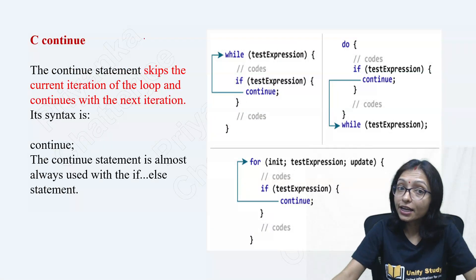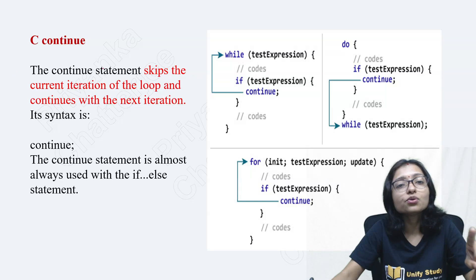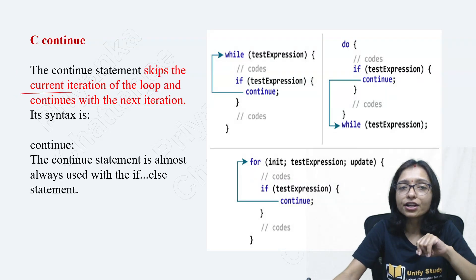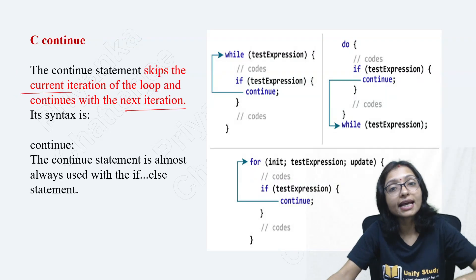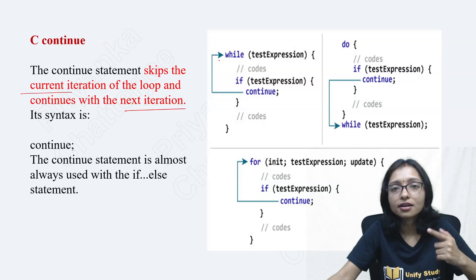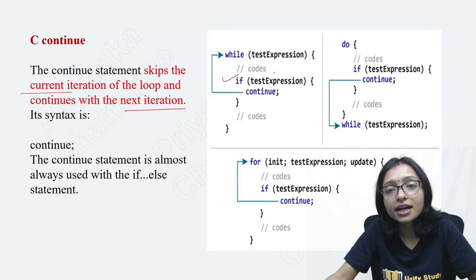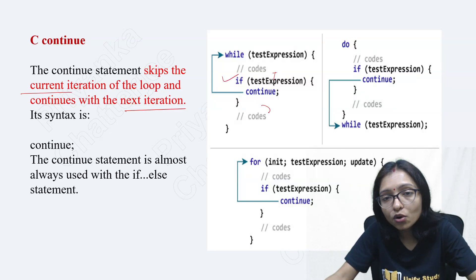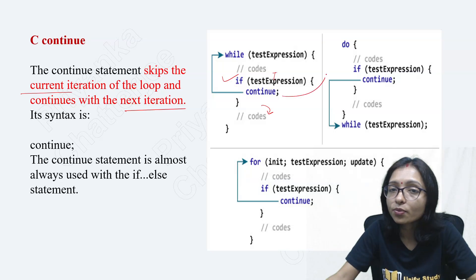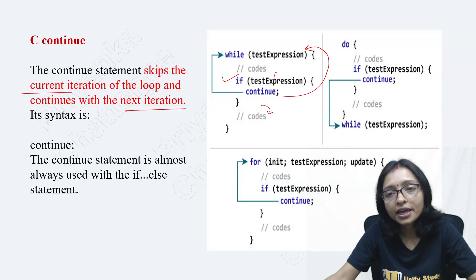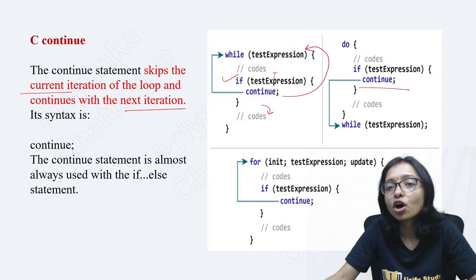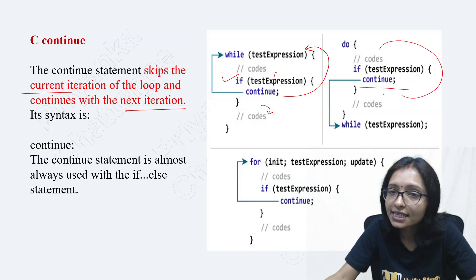And what does continue mean? Continue skips the current iteration from the loop and continues with the next iteration. Meaning, if the condition is true, the remaining code will not execute — it will go to the next iteration of the loop.